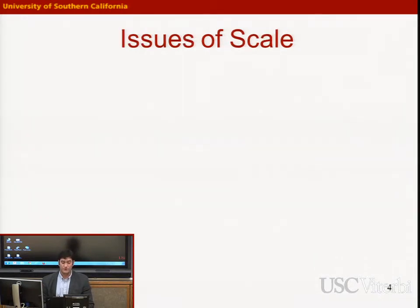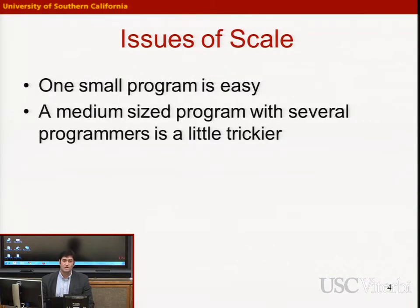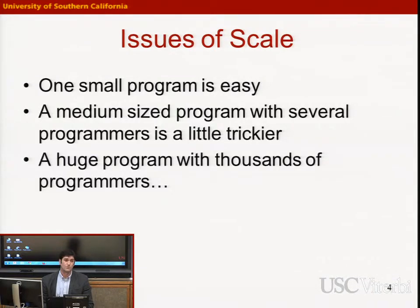One of the big problems we address in software engineering is issues of scale. One small program is easy — by the time you've completed a bachelor's or master's degree, it's fairly easy to code small programs effectively and without errors. However, it becomes much more challenging with a medium-sized program, where we have several programmers who must coordinate, carefully control versions of different resources, and ensure everyone is working together. The problem gets even more challenging with a huge program — one with millions of lines of code and perhaps thousands of programmers distributed across the globe.